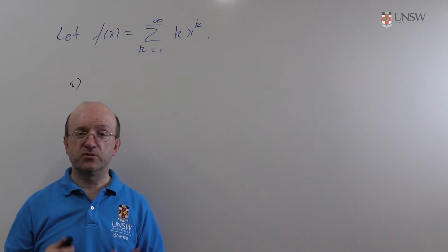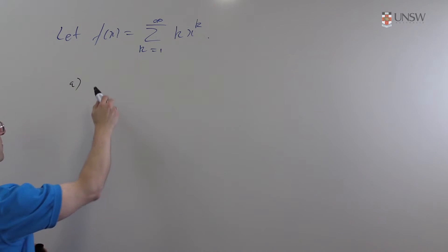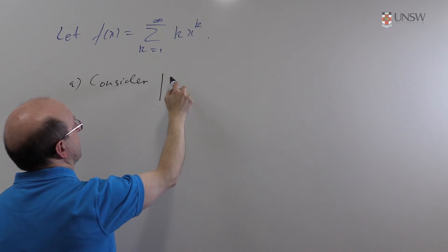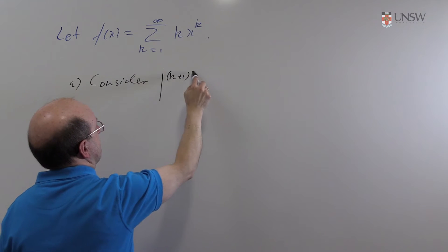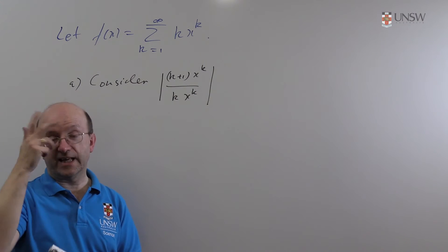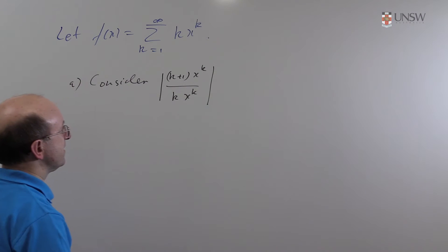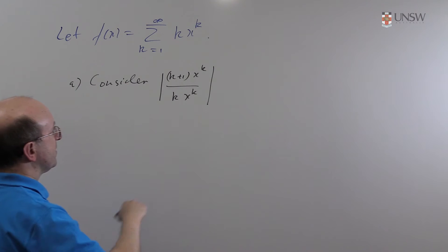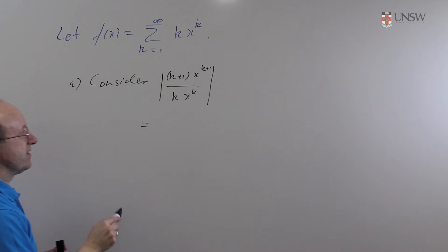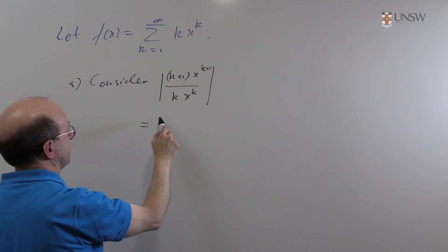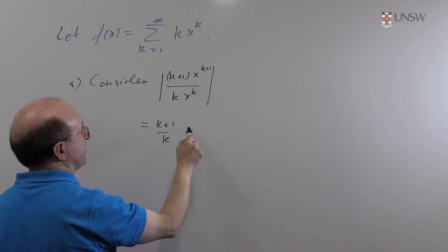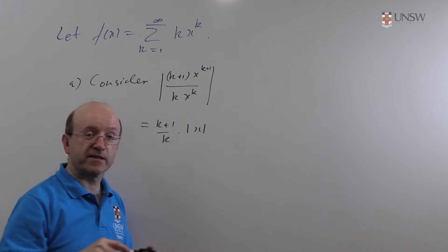And you're also going to be testing for absolute convergence, not just convergence. So what you do is you consider the absolute value of the k plus 1 term — in our case k plus 1 times x to the k plus 1 divided by k x to the k. That's a_k+1 over a_k if you're thinking in terms of an ordinary series. Well, as is usual most of these terms cancel off — we're going to get k plus 1 over k, which is positive so I don't need the absolute value signs on that, and I'm left with mod x.